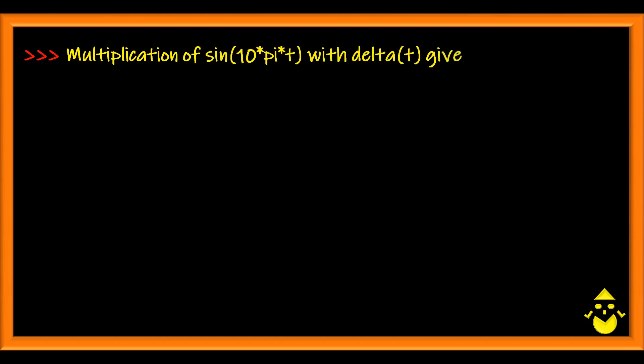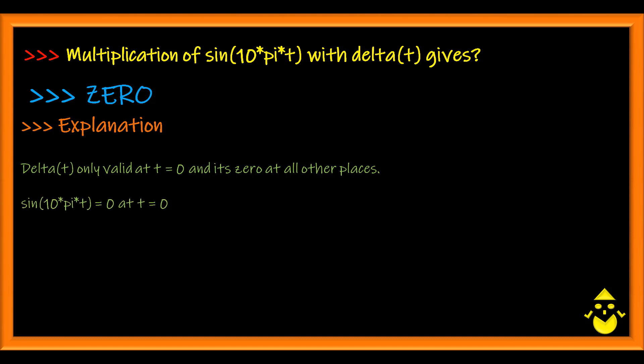Multiplication of sine 10t by t with delta of t gives 0, since delta t is valid only at t equal to 0, and it is 0 at all other places. Sine 10t at t equal to 0 is 0, product of these two gives you 0. However, cos 10t into delta of t gives you 1, since the value of cosine at t equal to 0 is 1.